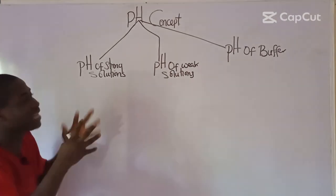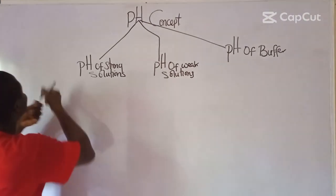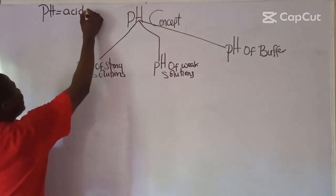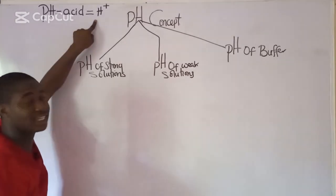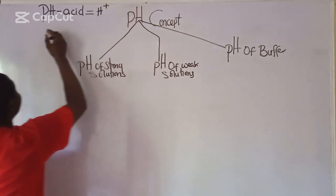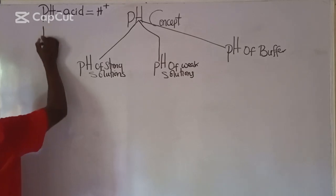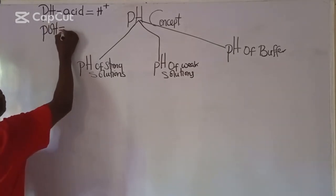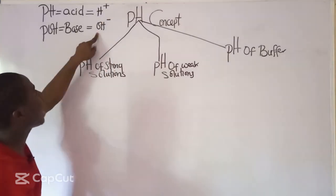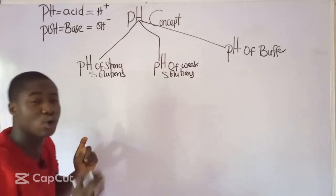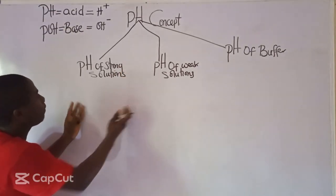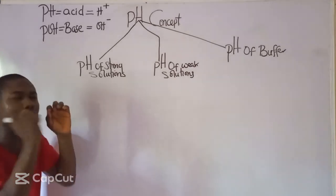pH has to do with acid, and acid involves H⁺, the hydrogen ion. Anything happening to acid must happen to base, so pOH relates to base, and base involves OH⁻, the hydroxide ion. When H⁺ is inside brackets, it is called hydrogen ion concentration; similarly, [OH⁻] is called hydroxide ion concentration.